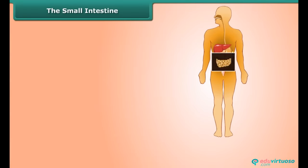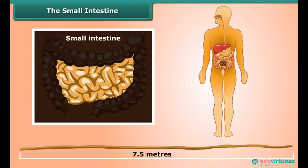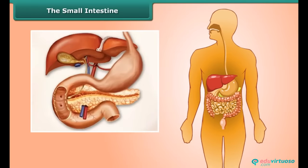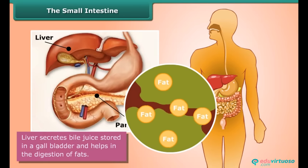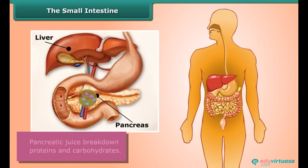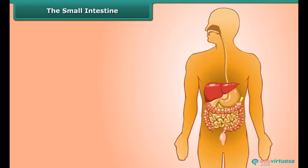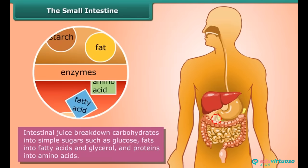The small intestine is the longest part of our digestive system — about 7.5 meters long and highly coiled. It is where most of the nutrients of the food are absorbed. The liver and pancreas also join the digestion. The liver secretes bile juice, stored in the gallbladder, which helps in the digestion of fats, whereas pancreatic juice breaks down proteins and carbohydrates.